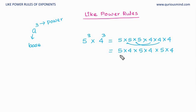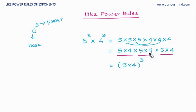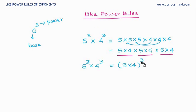Now I can see I have three pairs of (5 × 4), so I can write this as (5 × 4) raised to 3, because I am multiplying (5 × 4) with itself 3 times. So what we have done is: 5 raised to 3 multiplied by 4 raised to 3 equals (5 × 4) raised to 3. The power was the same and in the answer the power also stays the same — it does not change. What changes is the base: the bases are multiplied together.